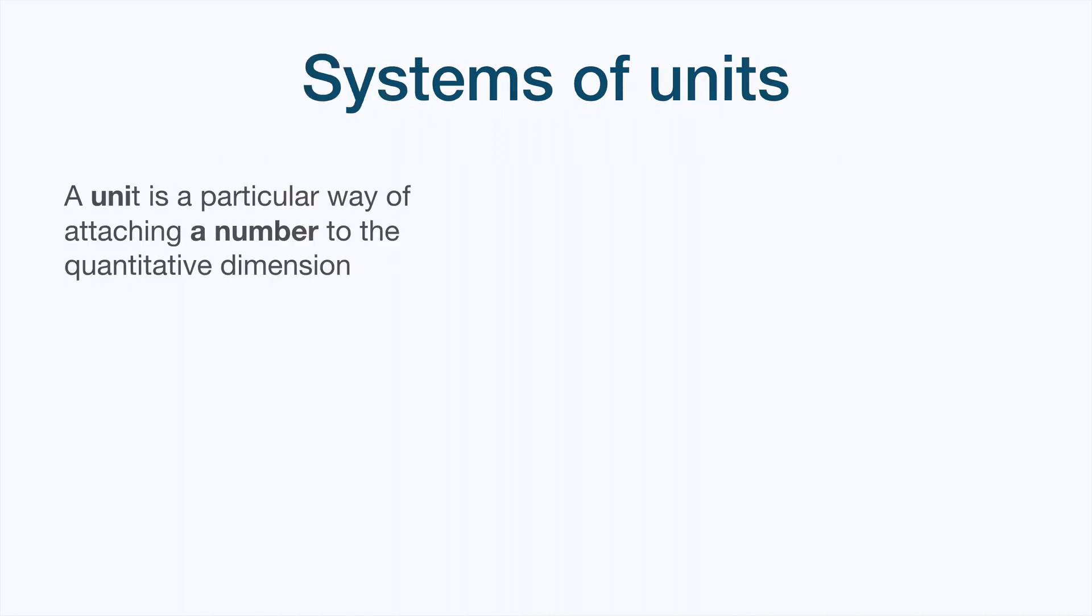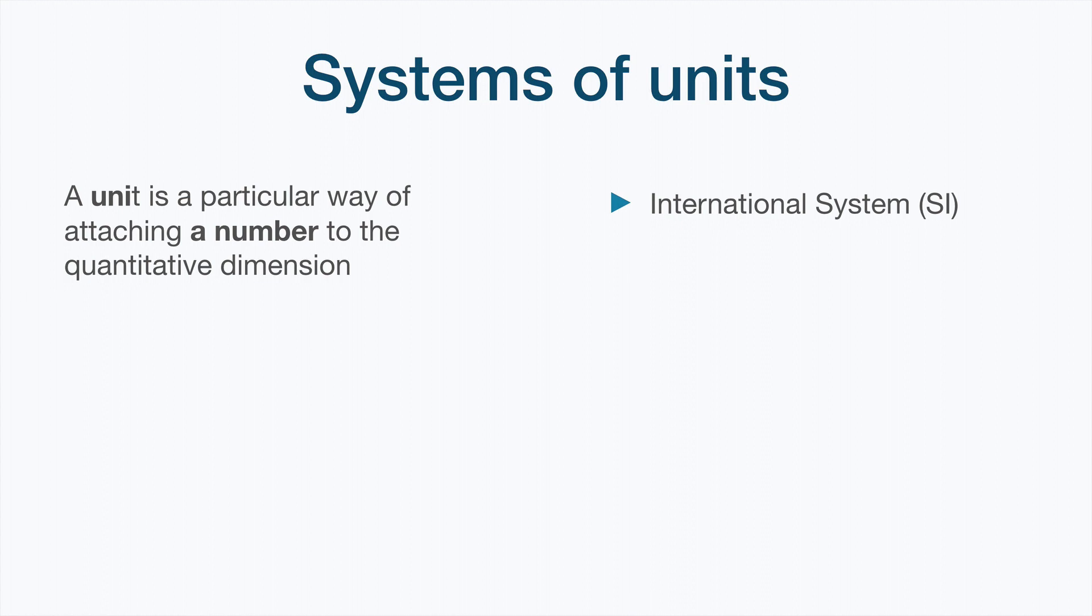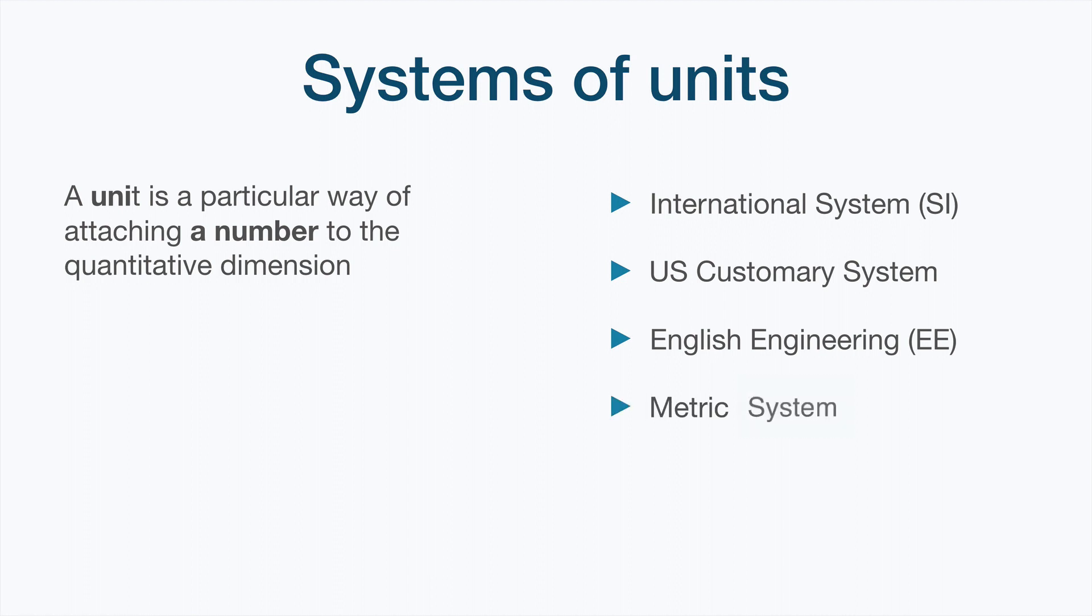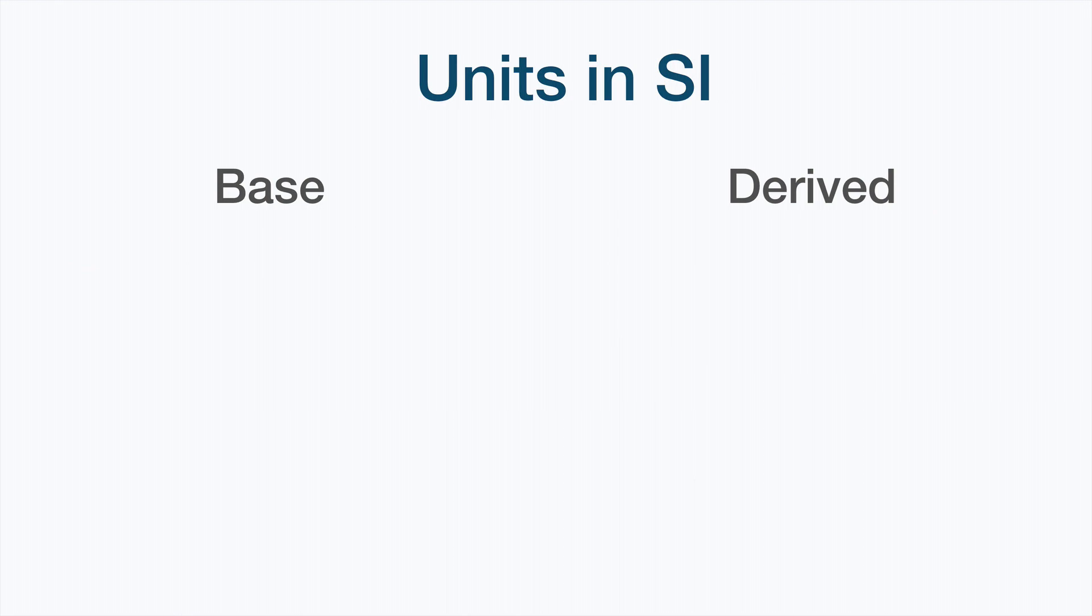Regarding units, a unit is a particular way of attaching a number to the quantitative dimension we have seen before. So we have several unit systems. The first is the international system of units. The system that we will use and the system that is applied and accepted by all the countries. The second system, of course, is the US customer system. The English engineering system, the British engineering system. The metric system is already not that used. And the CGS system.